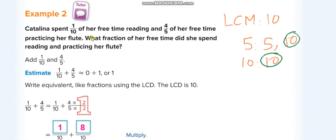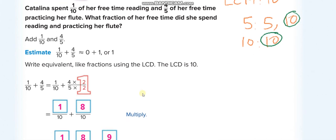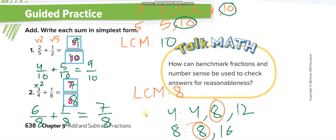Now look at 1/10 plus 4/5. The LCM of the denominators 10 and 5 is 10. The first fraction already has a denominator of 10, so we write it as it is. For 4/5: 5 times what gives 10? 5 times 2. So we multiply 4/5 by 2 — 4 times 2 is 8, and 5 times 2 is 10. So 1/10 plus 8/10 equals 9/10.